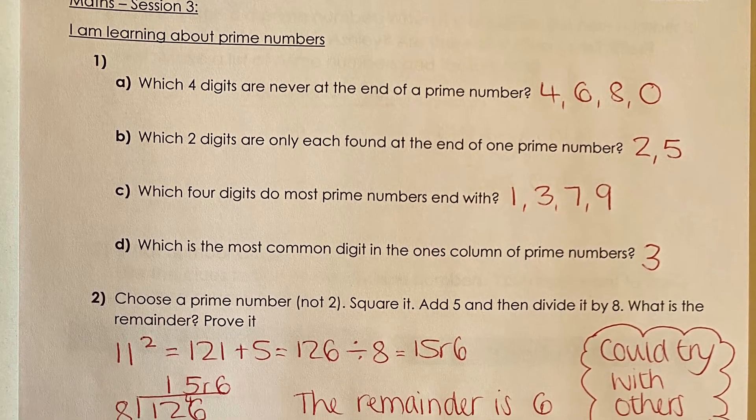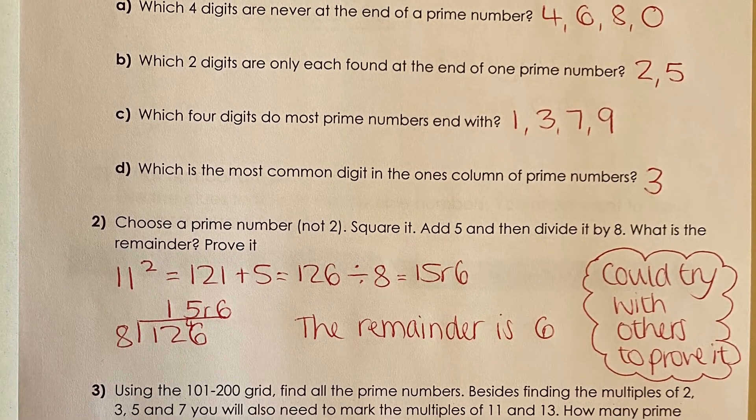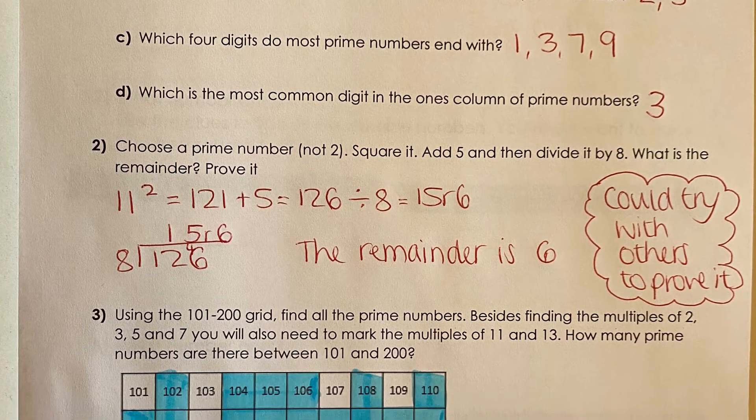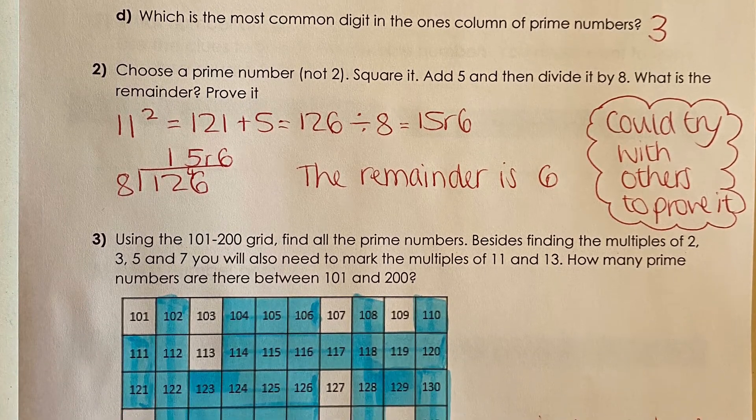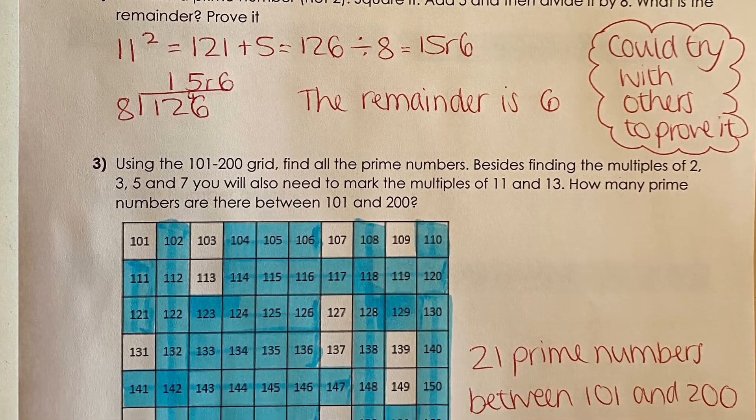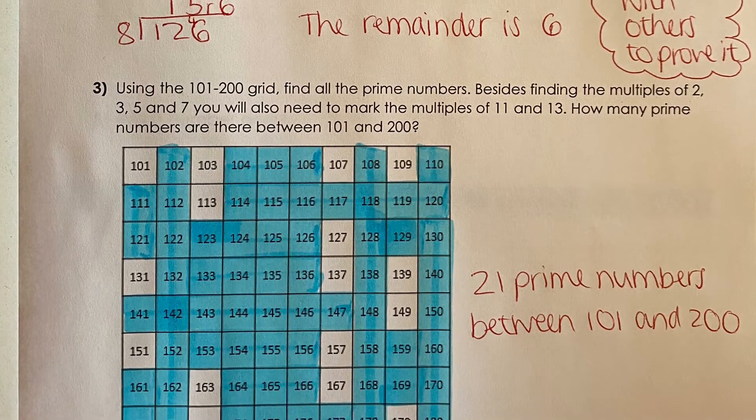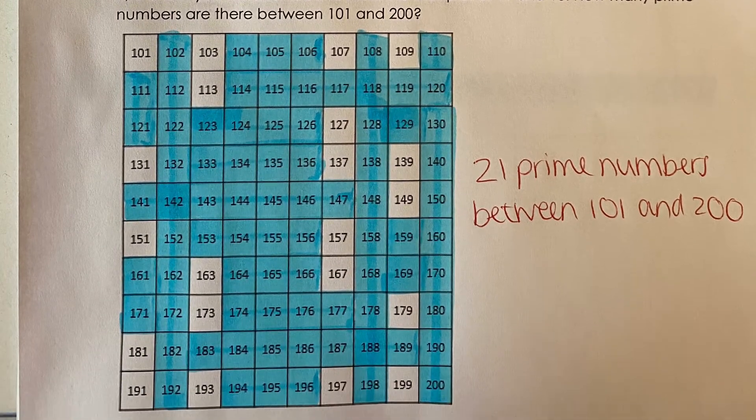Good morning Year 6, here are the answers from yesterday's tasks. Please pause the video and mark your work. I'm hoping that you found that there were 21 prime numbers between 101 and 200. Well done.